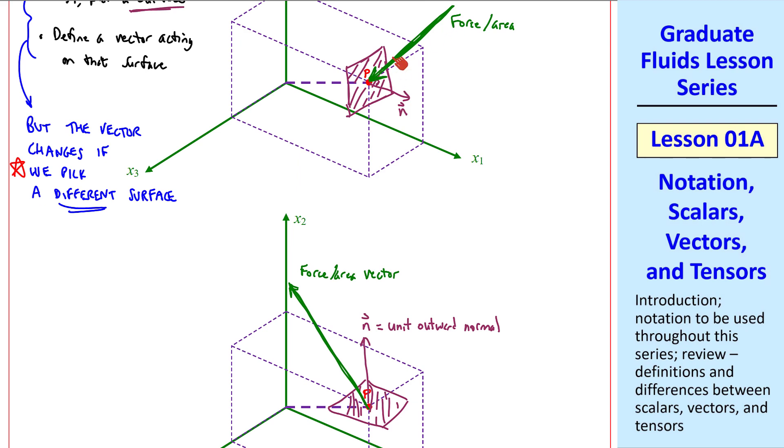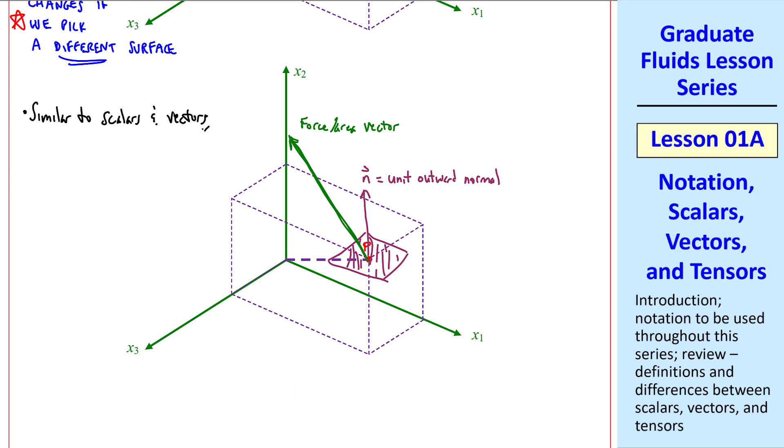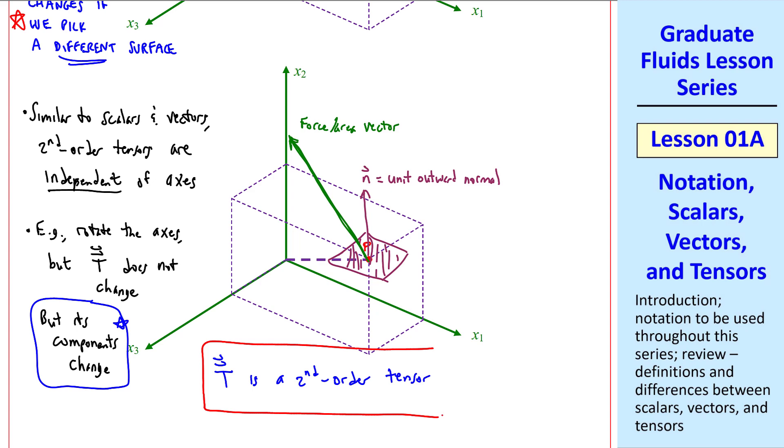It has a different magnitude and direction. In fact, comparing the two, I drew this one as inward and this one as outward. Similar to scalars and vectors, second-order tensors are independent of the axes we choose. For example, we can rotate the axes, but t does not change. We still have the same tensor property at this point p, but its components will change. t, of course, is a second-order tensor. That's what we're talking about.